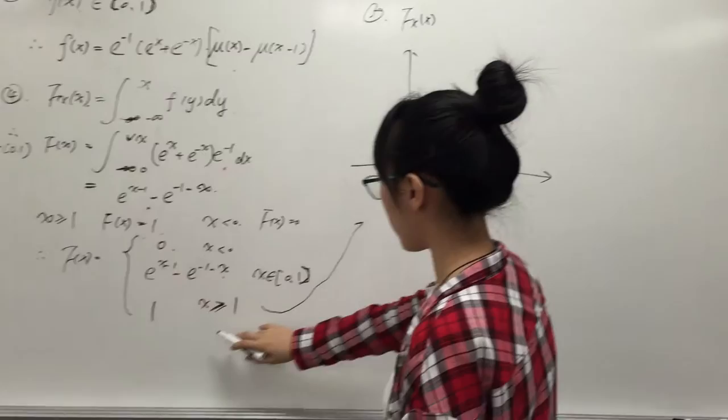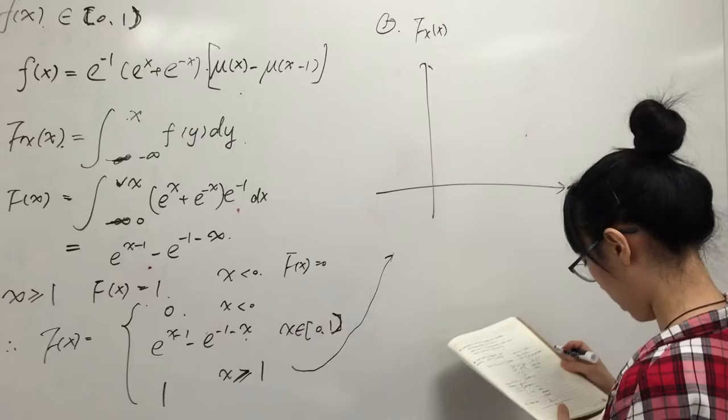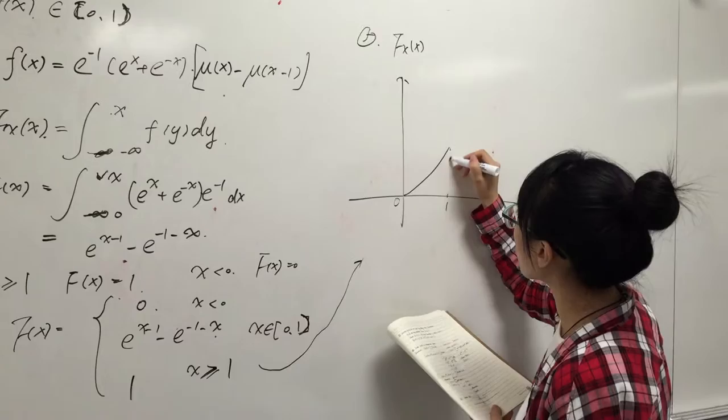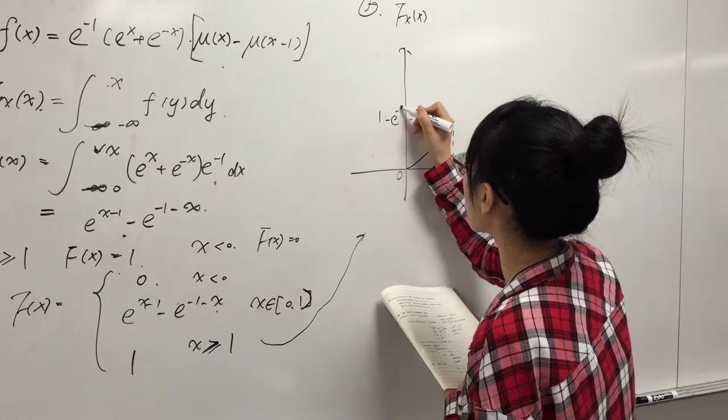The first question is to sketch f(x). According to the equation description, we can find that when x has a value from 0 to 1, it will be an increasing curve like this. And it will stop when x equals 1.